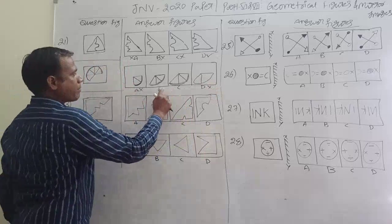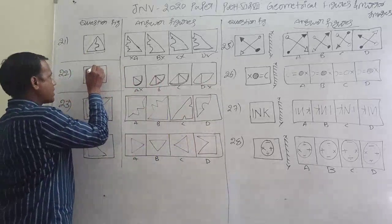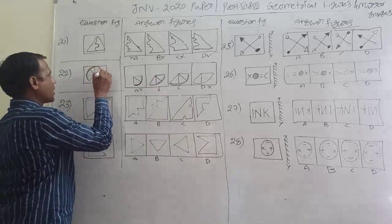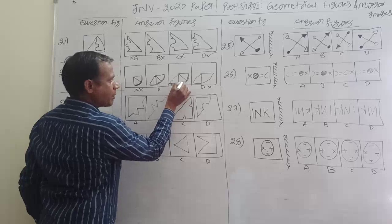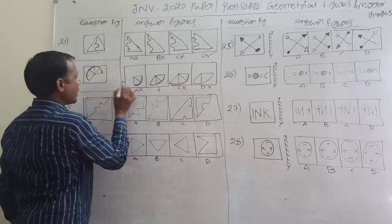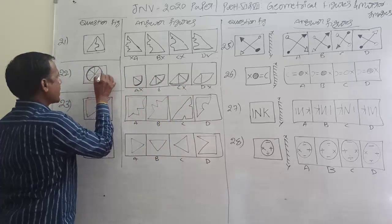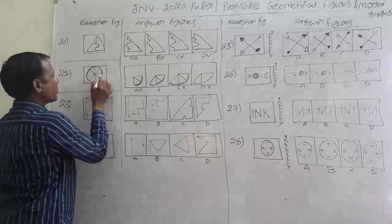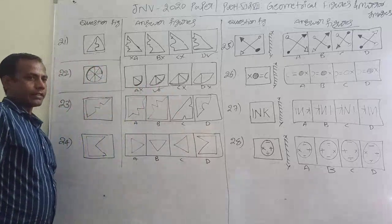Which is the right answer — B or C? It's completely black and dark lines. Here the line has 50 spaces, so this is not the answer. Counting: 1, 2, 3. If you don't have 3 parts, then the right answer is B. We don't have 3 parts, so B is the right answer.